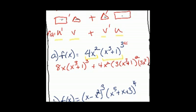What I recommend you do in this case is look for expressions that are common. Here I see that there's an x cubed plus 1 and another x cubed plus 1, and the smallest power they have in common is a 2, so I can factor that out. And here I have an 8x, a 4x squared, and a 3x squared, so we can definitely pull out an x and a 4.